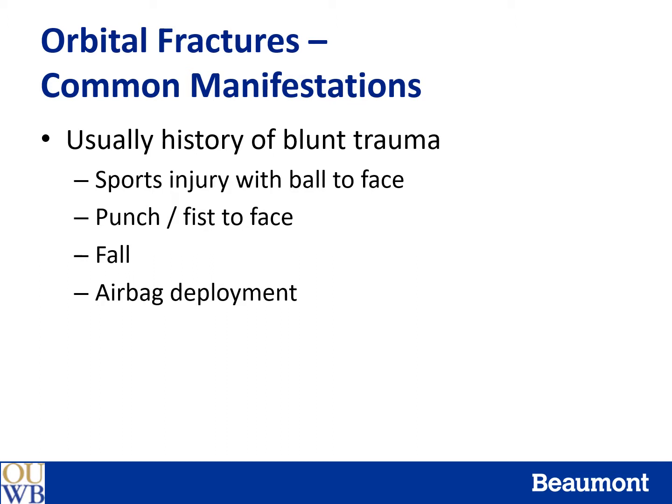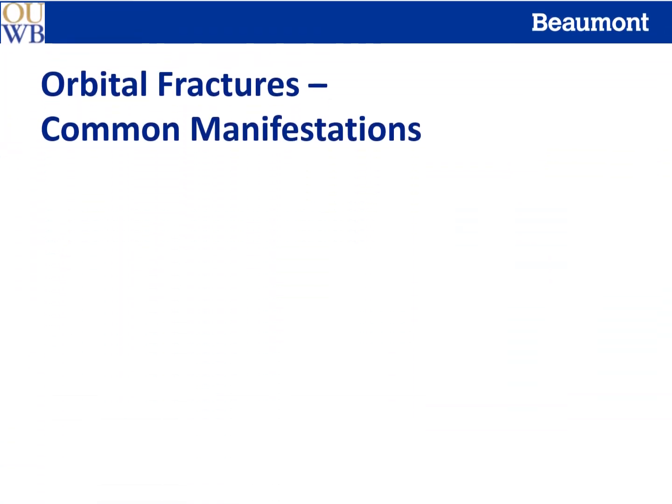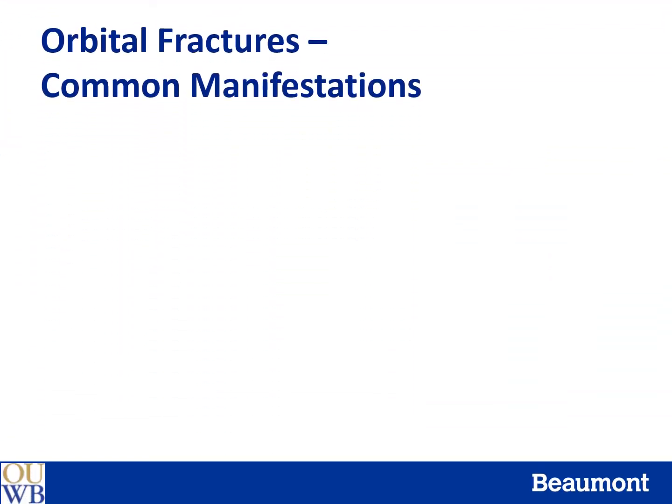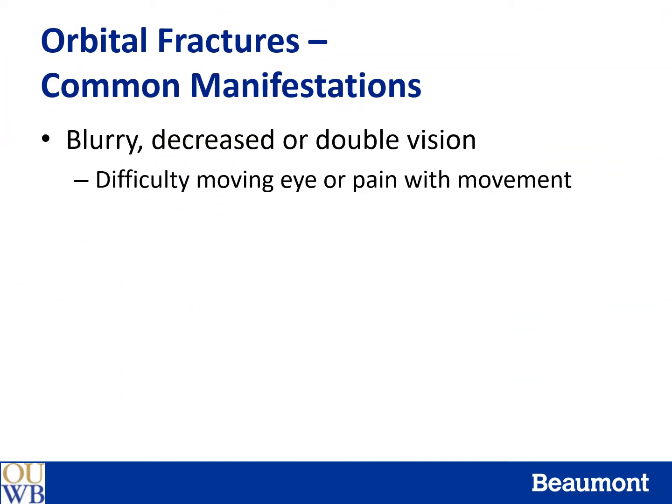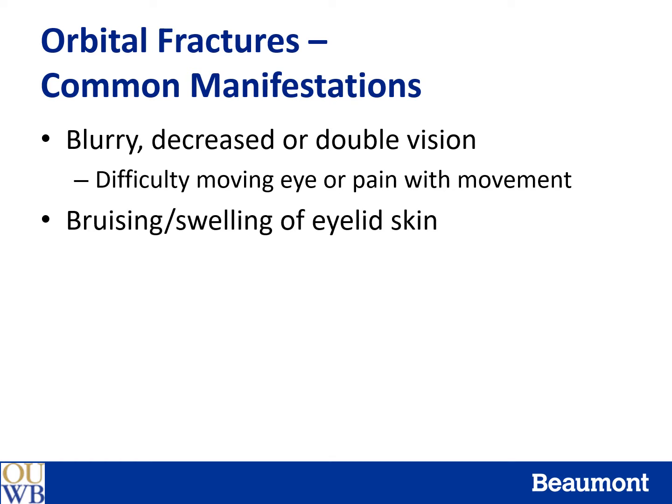Next, we will discuss orbital fractures. There is usually a history of blunt trauma, such as a sports injury with balls, equipment, or extremities hitting the orbit, or a punch or fist to the face, or a fall, or airbag deployment. Patients with orbital fractures may present with blurry, decreased, or double vision. Sometimes they note difficulty moving the eye or pain with eye movement. There may be bruising or swelling of the eyelid skin.